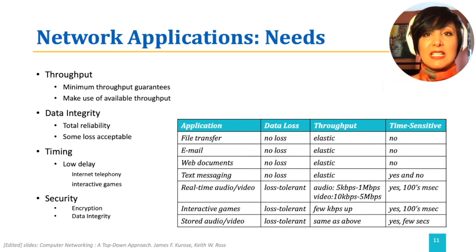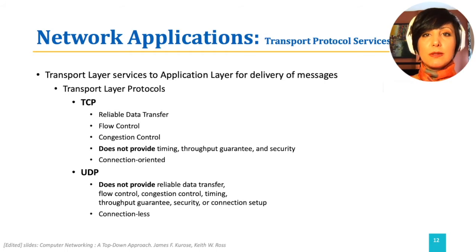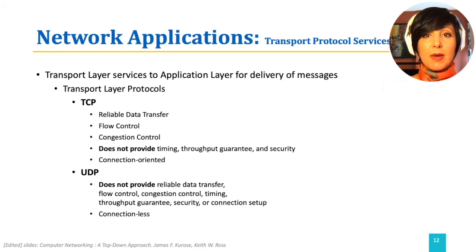These needs are dependent on each use case. The transport layer of the internet is mainly based on two protocols, TCP and UDP. Among the services we discussed that are required by applications, TCP and UDP provide some of them.